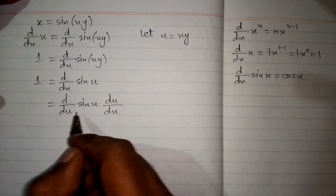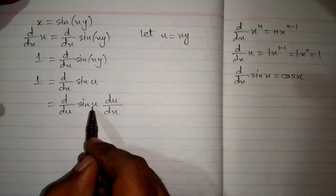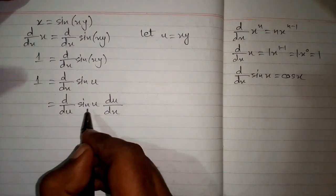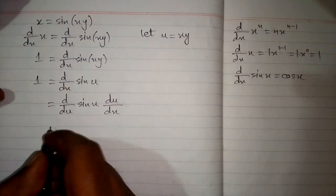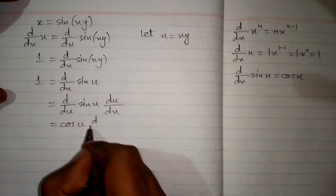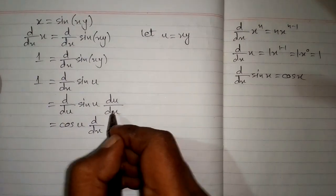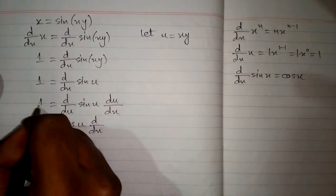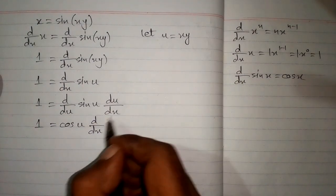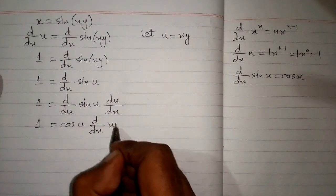Now we can apply the formula because the variable matches. So, the derivative of sin of u is cosine of u, and we substitute back the value of u which is xy, giving us cosine of xy.